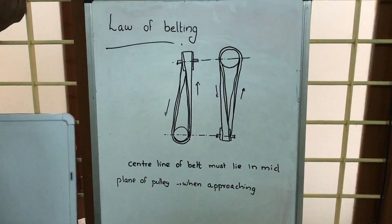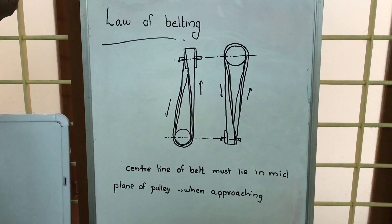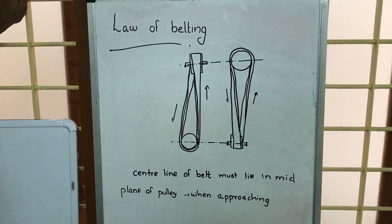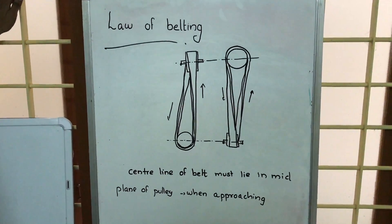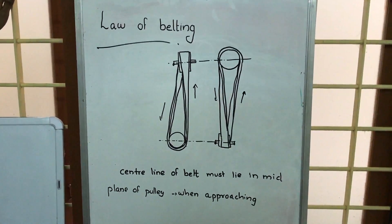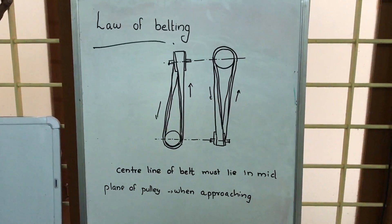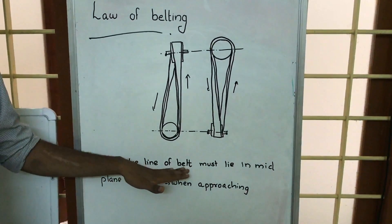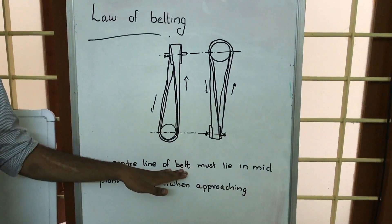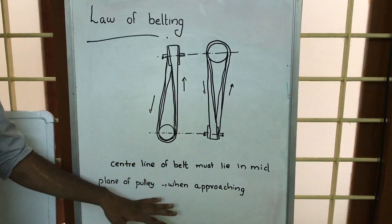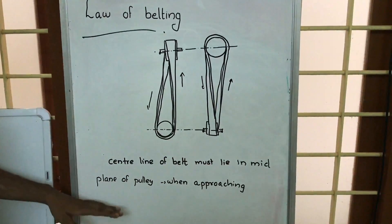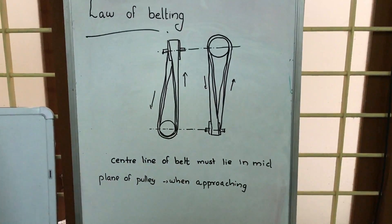Here we are going to discuss about the law of belting. The law of belting states that the center line of the belt, when approaching the pulley, must lie in the mid-plane of the pulley.